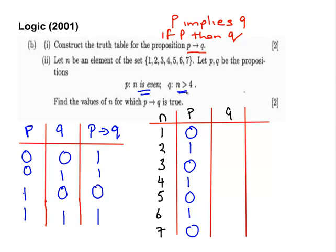The next one is Q, N is greater than 4. 1 is not greater than 4, 2 is not greater than 4, 3 is not greater than 4. Now watch out for this one: 4 isn't greater than 4, so that's a 0 there. Then 1, 1, and 1.